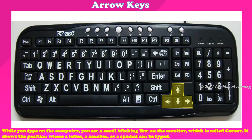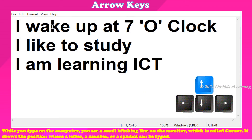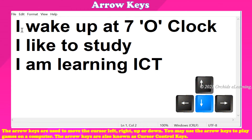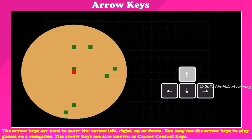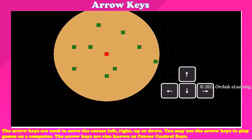Arrow keys: while you type on the computer, you see a small blinking line on the monitor called the cursor. It shows the position where a letter, number, or symbol can be typed. The arrow keys are used to move the cursor left, right, up, or down. You may also use the arrow keys to play games on a computer. The arrow keys are also known as cursor control keys.